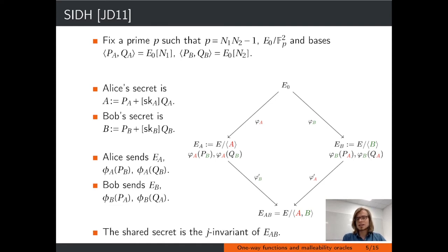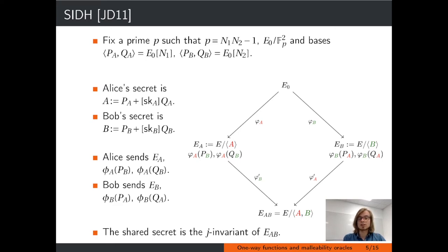It is easy to see that recovering the isogeny, say phi_A, would allow an attacker to break the key exchange. Given E0 and EA, this would be an instance of the pure isogeny problem. However, we are also given additional torsion point information. In our work, we were looking at whether this additional torsion point information makes it possible to reduce the problem of recovering an isogeny to an instance of the abelian hidden shift problem.